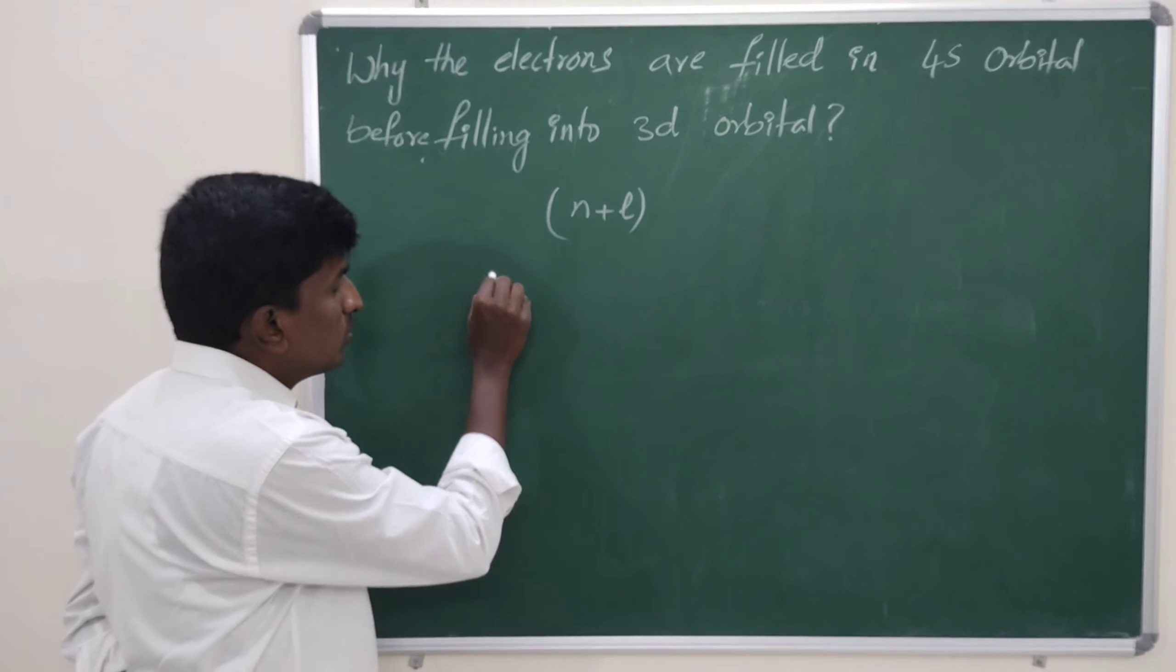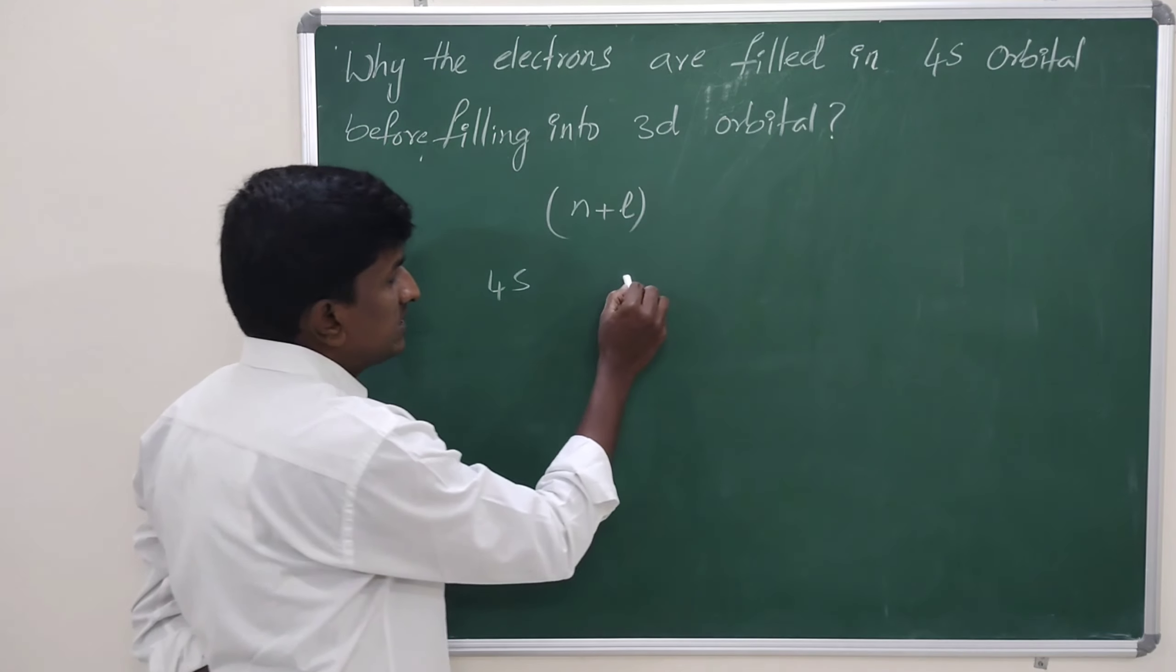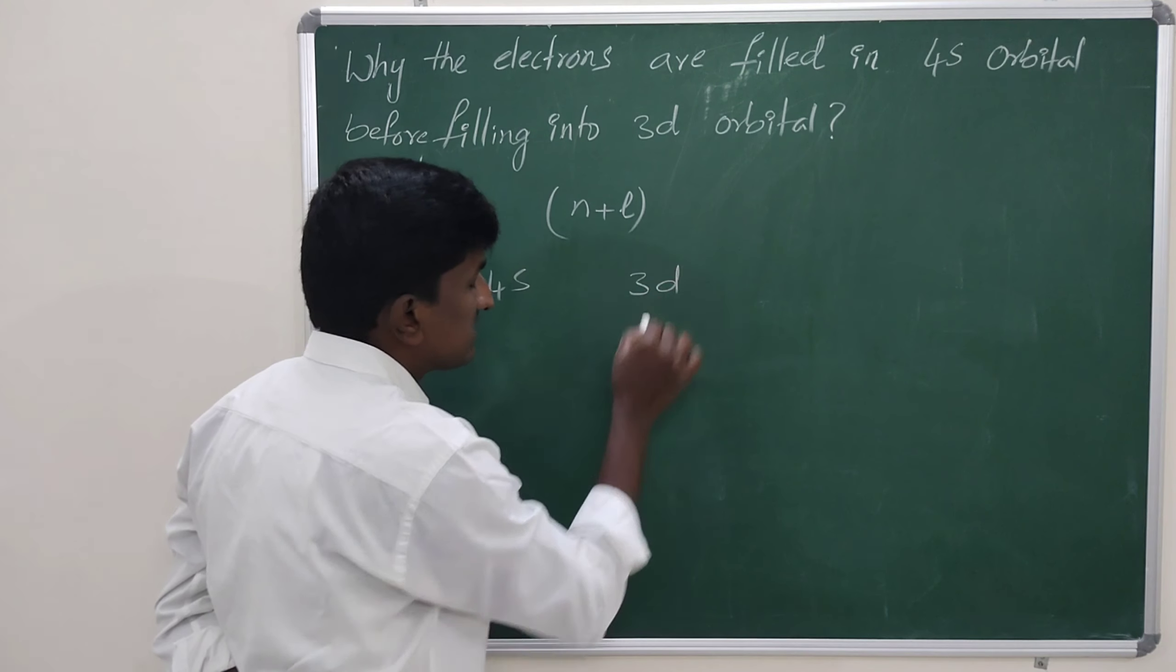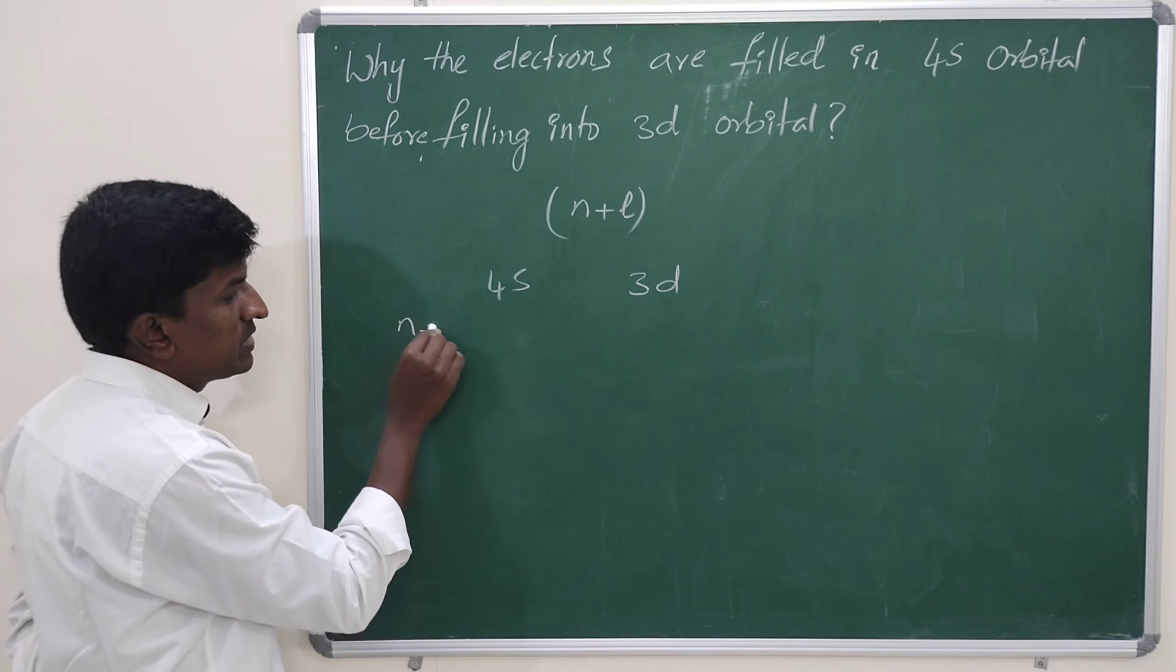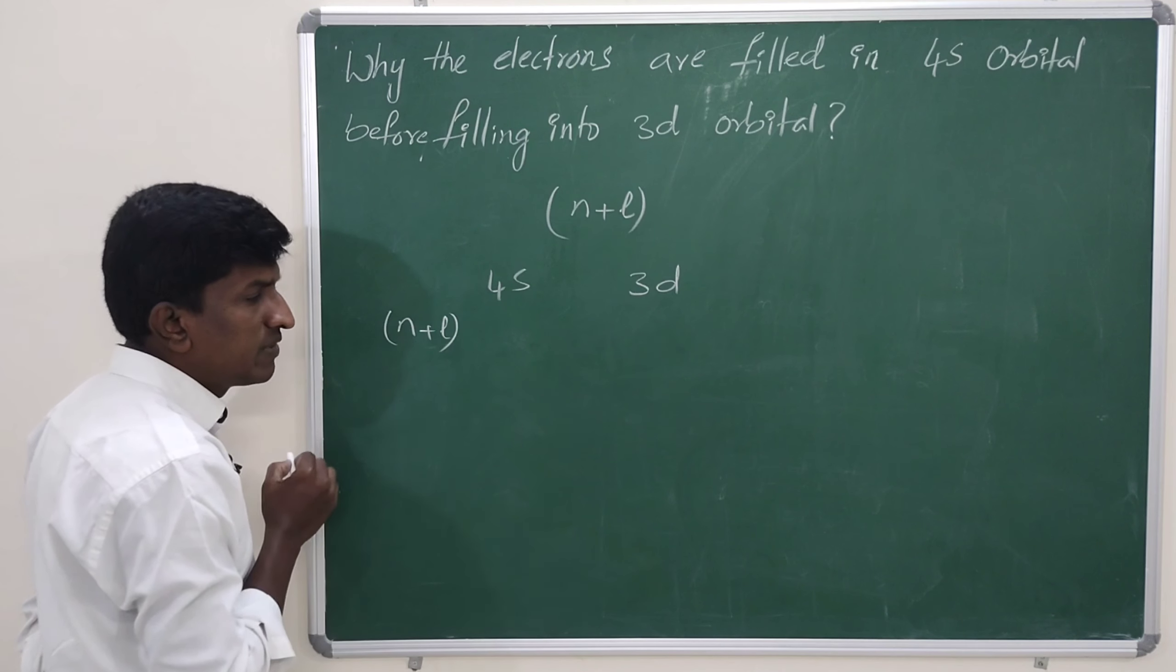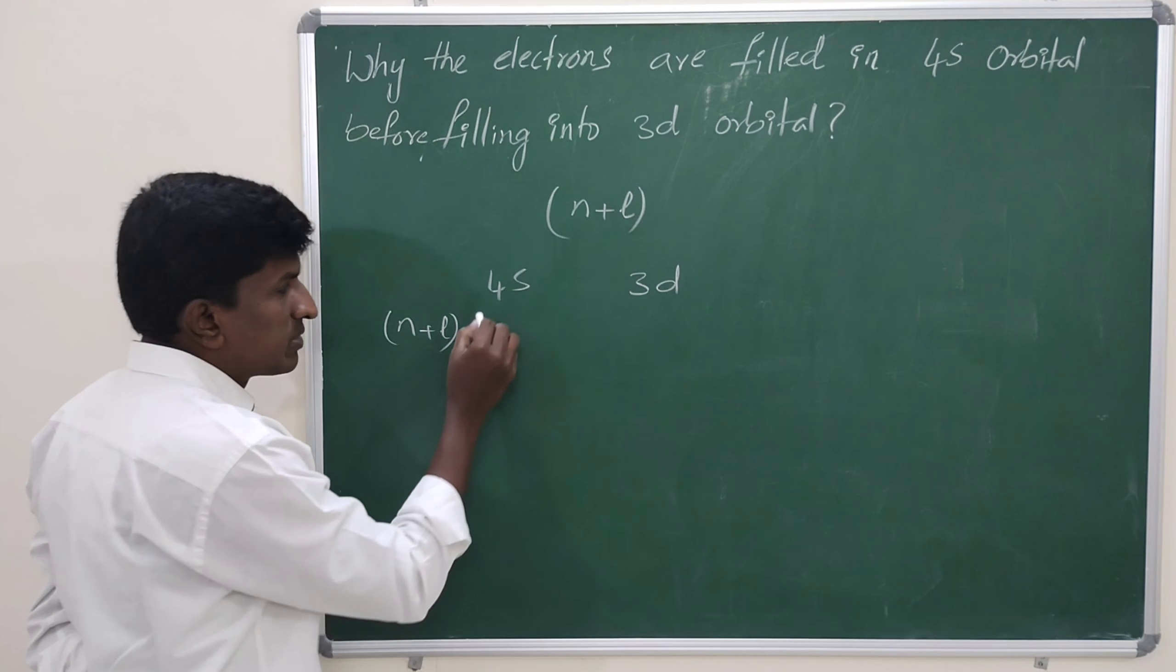Let us take two orbitals first here. One is 4s, second one is 3d. The n plus l value of the 4s orbital.